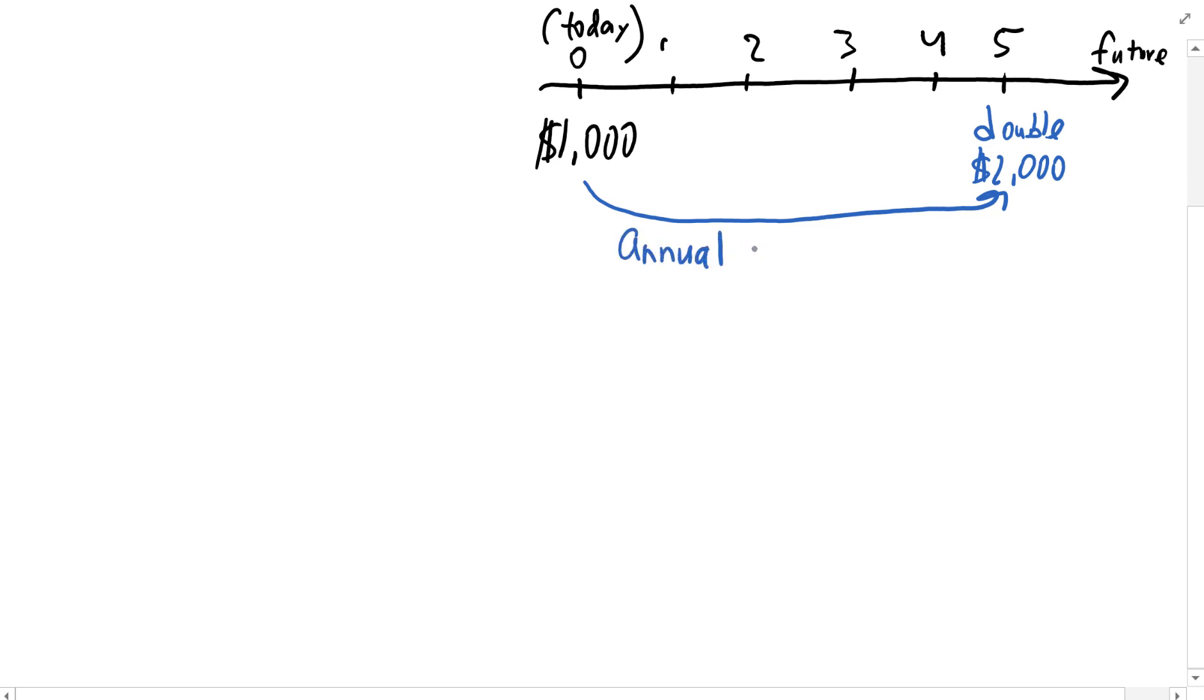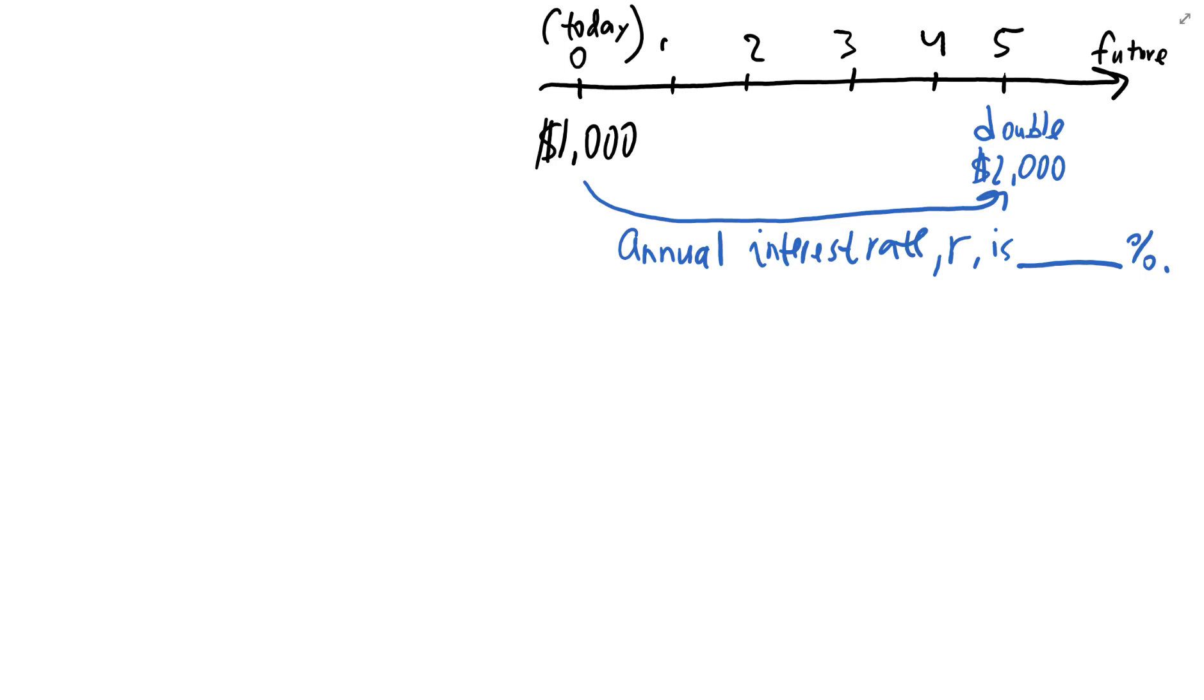So annual interest rate, which is R, should be some percentage per year. How would we calculate this? Let's bring up the financial calculator. Let's turn it on.